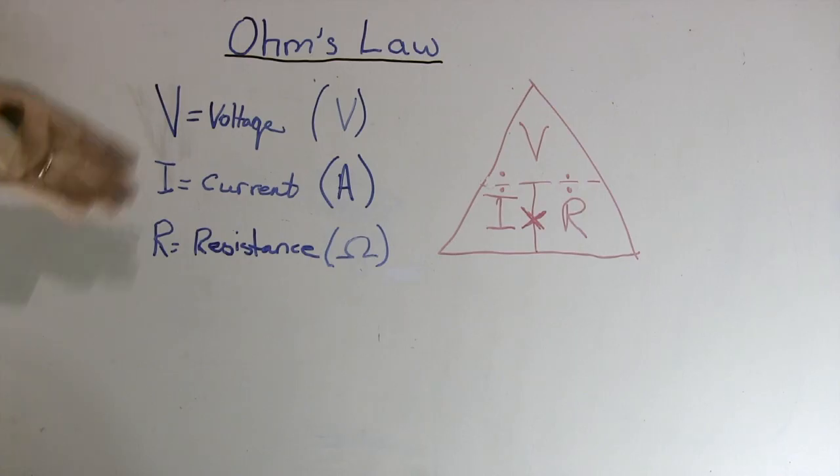And what is it that will stop all this from flowing? Resistance. Its intention is to stop current flow. So the more resistance we have, the lower the current will be, providing the pressure stays the same.